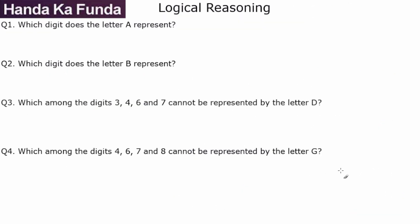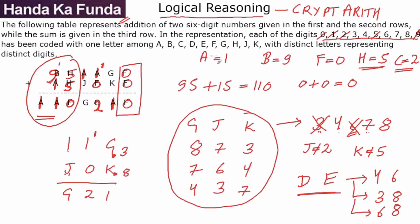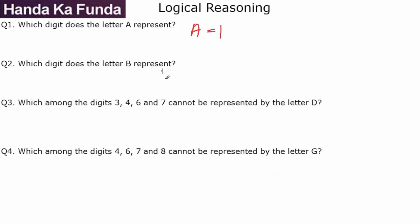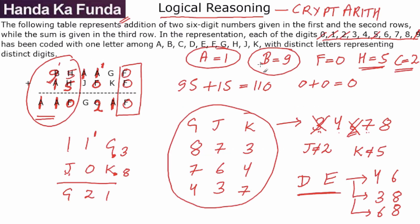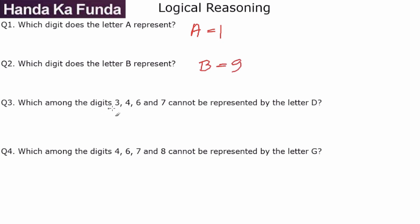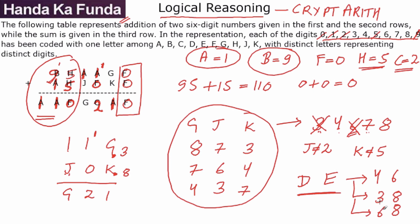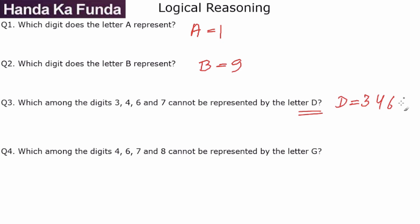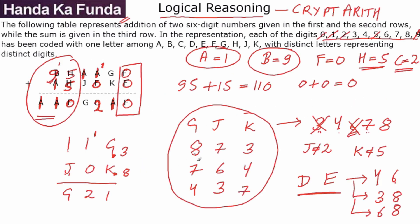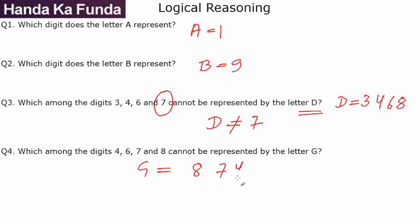Now let's look at the questions. What does A represent? Clearly, A is 1. What does B represent? Clearly, B is 9. Which among the digits 3, 4, 6 and 7 cannot be represented by D? D could be 3, 4, 6 or 8, so D cannot be 7 — the answer is 7. Which among the digits 4, 6, 7 and 8 cannot be represented by G? G can be 8, 7 or 4, so G cannot be 6 — the answer is 6.